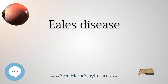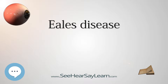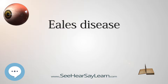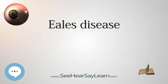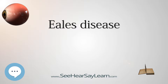Eales' disease is a type of obliterative vasculopathy, also known as angiopathia retinae juvenilis, periflebitis retinae, or primary perivasculitis of the retina. It is an ocular disease characterized by inflammation and possible blockage of retinal blood vessels, abnormal growth of new blood vessels (neovascularization), and recurrent retinal and vitreous hemorrhages. With a characteristic clinical picture, fluorescein angiographic finding, and natural course, it is considered a specific disease entity.